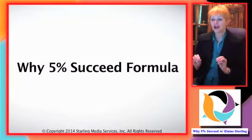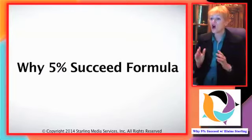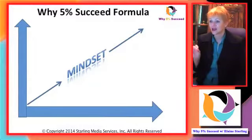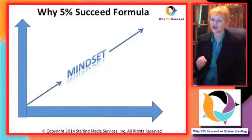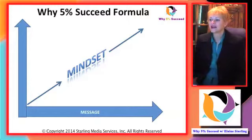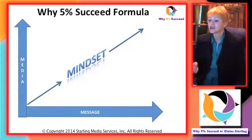The why 5% succeed formula has three different components. It all begins with the mindset of your ideal client — what they're thinking about, what their priorities are. The second component is the message that your ideal client most wants to hear from you. The third component is the media that your ideal client consistently uses.